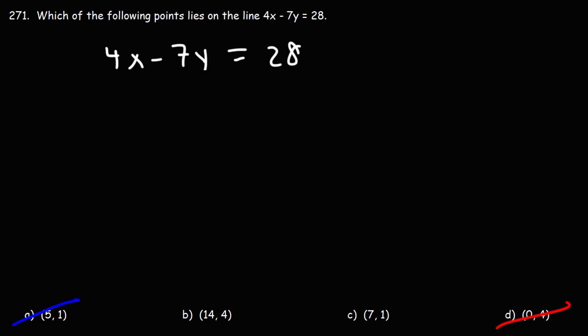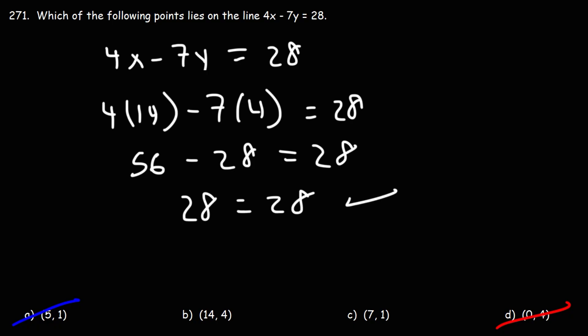Let's try B. Let's replace x with 14 and y with 4. 4 times 14 is 56, 7 times 4 is 28, 56 minus 28 is 28. Both sides are the same. This point lies on the line 4x minus 7y equals 28. It satisfies the equation. So that's how you could find the answer for questions like that.